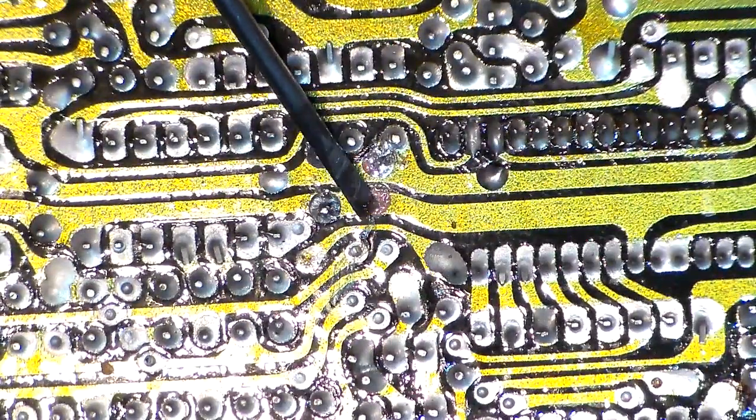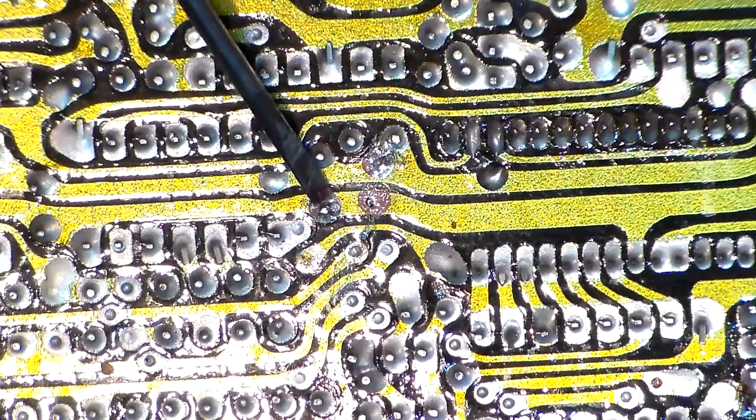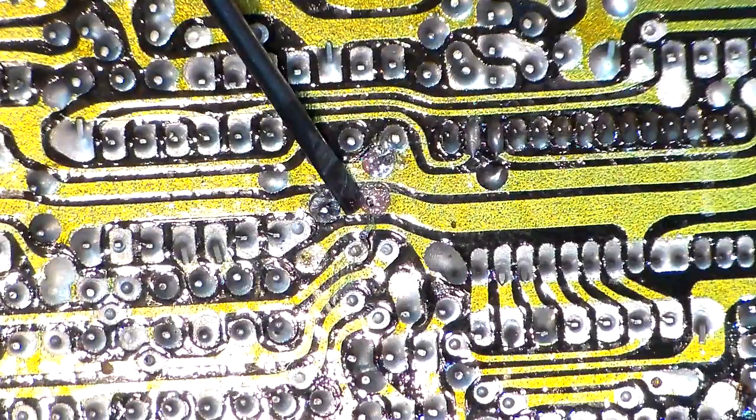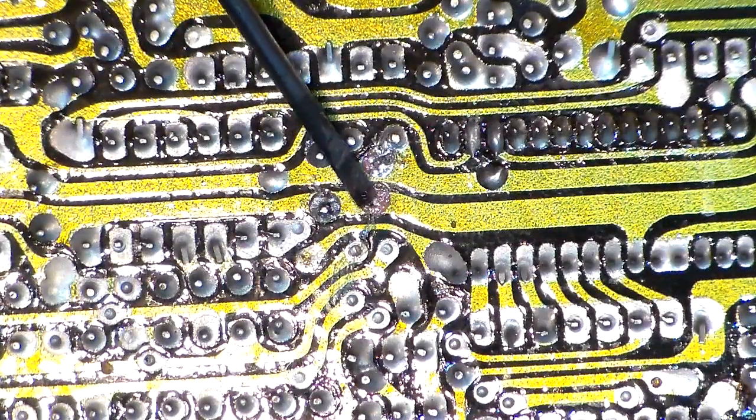So you end up with, you still have a tight solder connection to the leg and you can't tell it, but you lose connection between your solder and your trace pad.